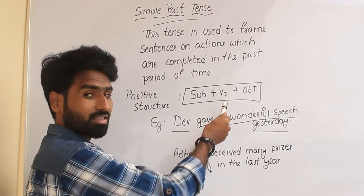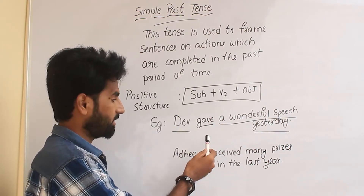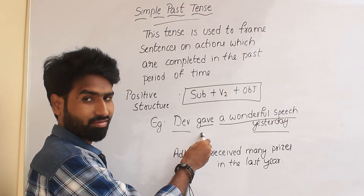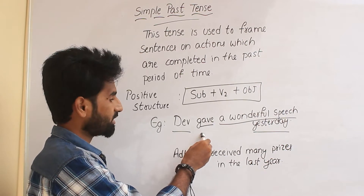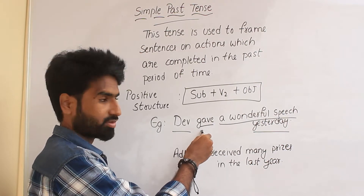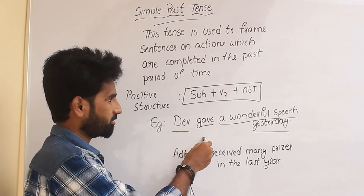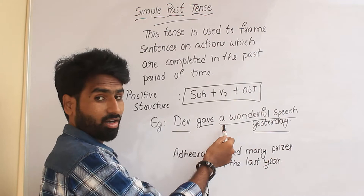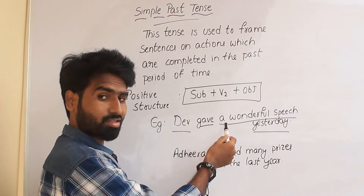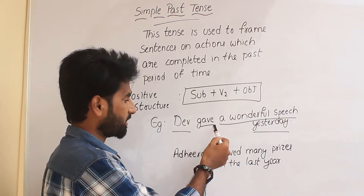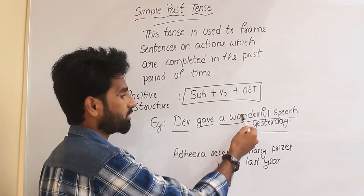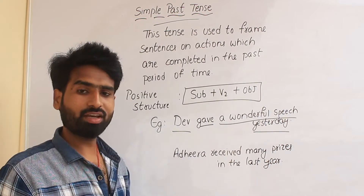Next, the verb in the second form is 'gave.' The actual V1 is 'give,' and 'gave' is the V2 change. The object is always the receiver of the action.